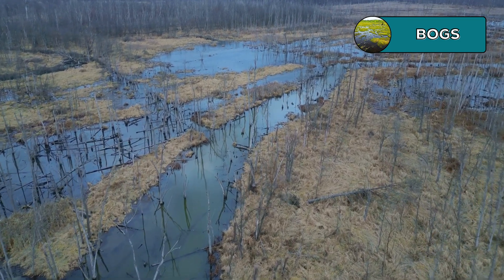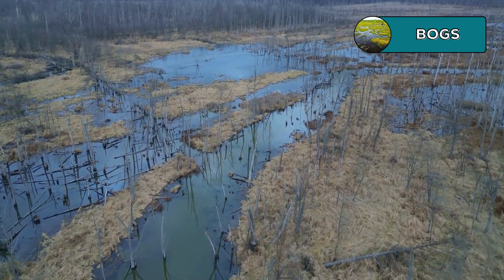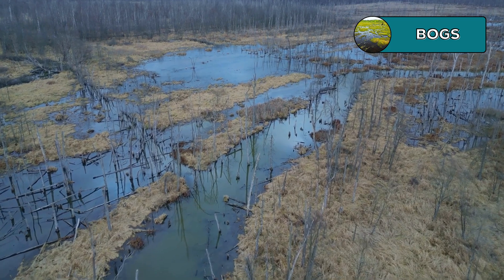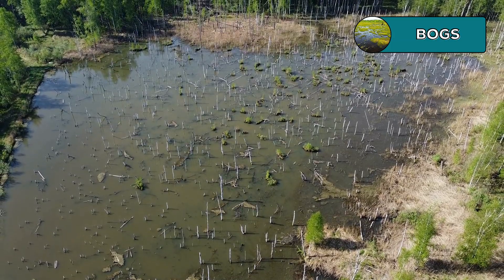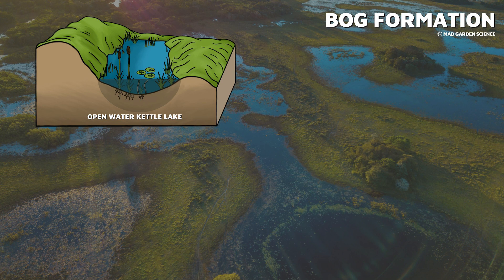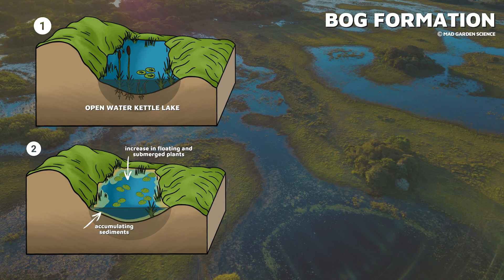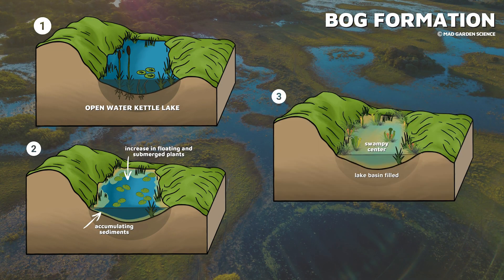While swamps and marshes are generally found in warm climates, bogs can also be found in cold areas in North America, Europe, and Asia. Bogs develop in areas where the water table is high. They often begin in glacial depressions called kettle lakes — the same idea as the prairie potholes we've already covered, but deeper. A bog forms as a kettle lake gradually fills with plant debris such as stems, leaves, and roots. Soon mosses and other plants begin growing along the edges of the lake, extending into the water, causing it to become choked with vegetation.